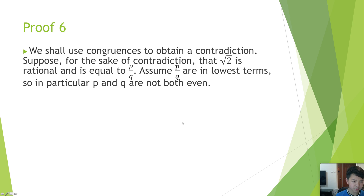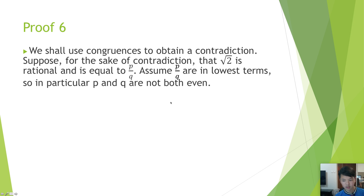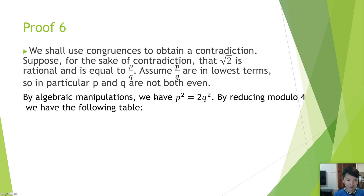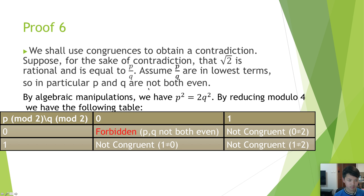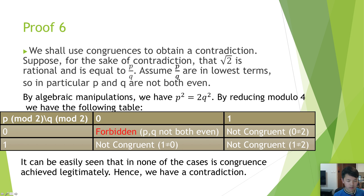Proof 6. We shall use congruences to obtain the contradiction. Suppose for the sake of contradiction that the square root of 2 is rational and is equal to p over q. Assume that p over q is in its lowest terms, so in particular p and q are not both even. By algebraic manipulations we have p squared equal to 2q squared. By reducing modulo 4 we have the following table. It can be easily seen that in none of these cases is the congruence achieved. Hence, we have a contradiction.